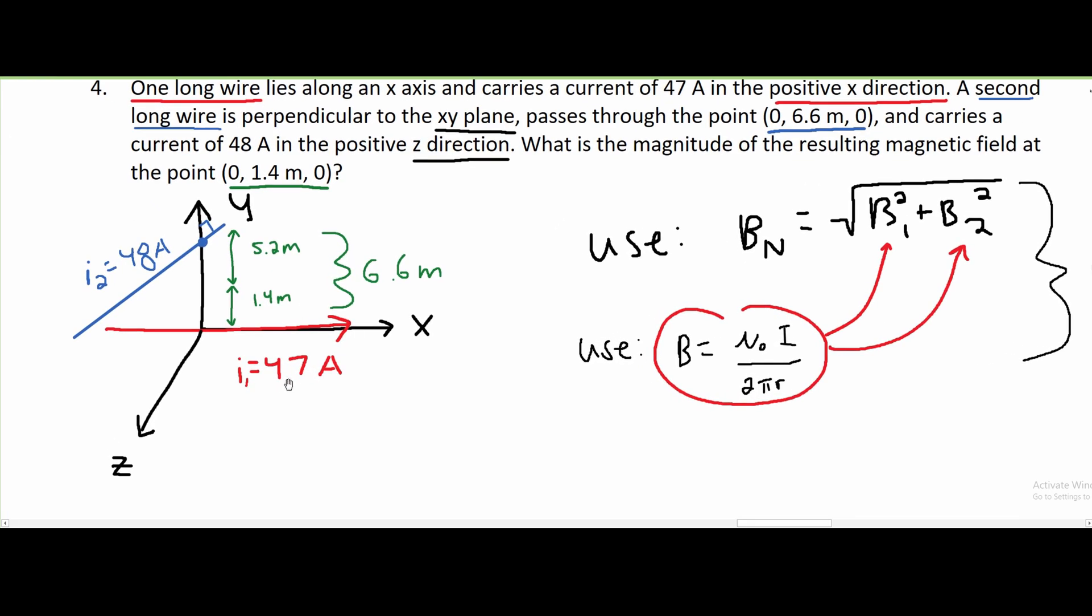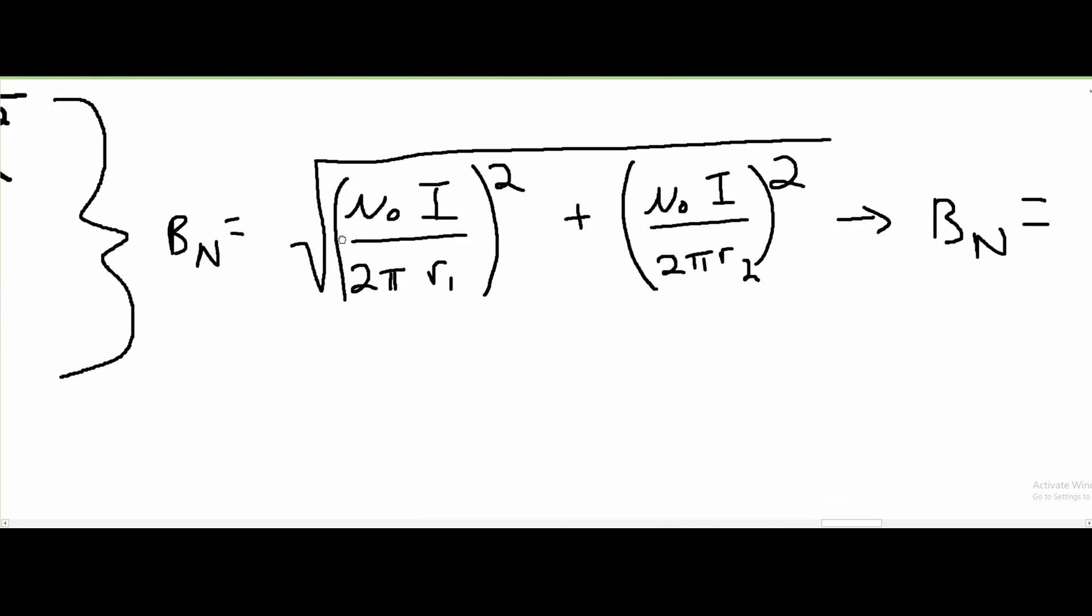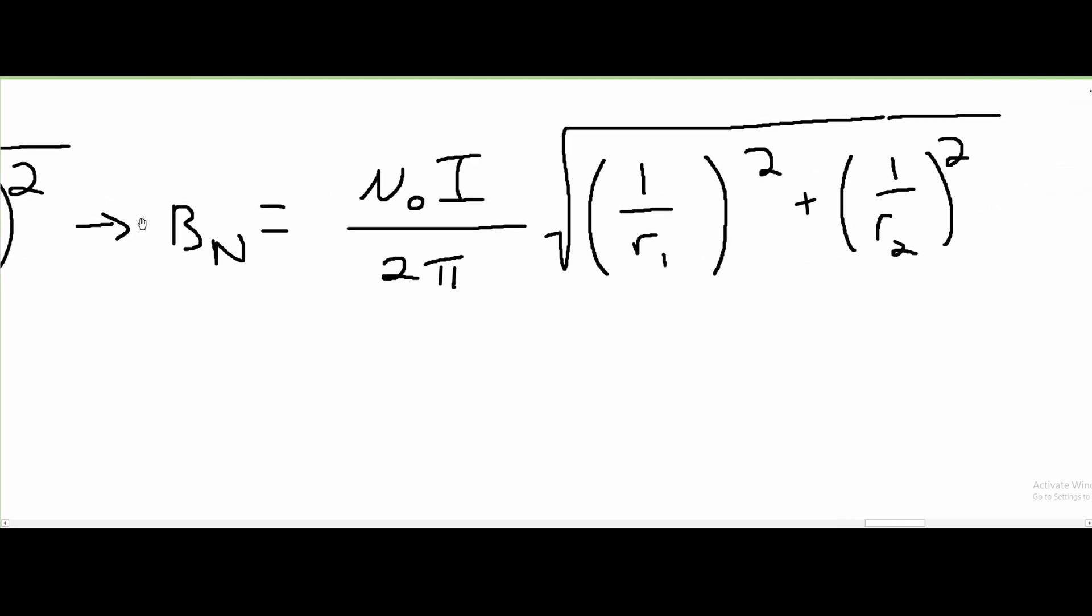I did forget that we actually have two different currents, so that means we are going to have an I1 and an I2 as well. So that means, since these are different, it cannot be factored out. This I cannot be factored out, and only our μ₀ is going to be factored out on the top. And in here, we are going to have an I1 and an I2.